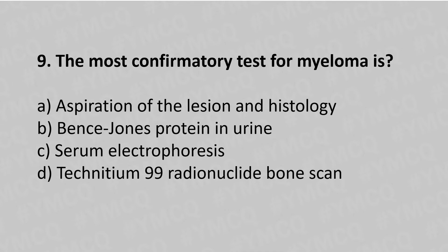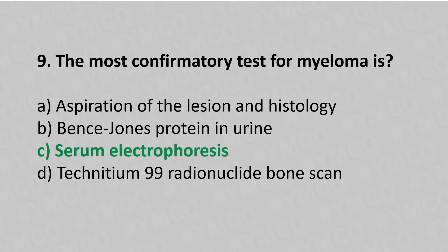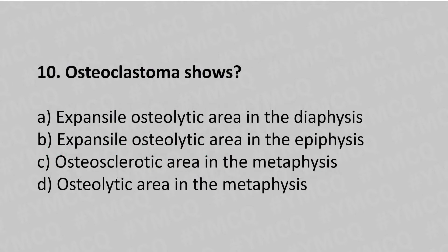Now let's move to question number 9. The most common confirmatory test for myeloma is — option A: aspiration of the lesion and histology, option B: Bence Jones protein in the urine, option C: serum electrophoresis, option D: Tc-99m radionuclide bone scan. The answer is option C: serum electrophoresis.